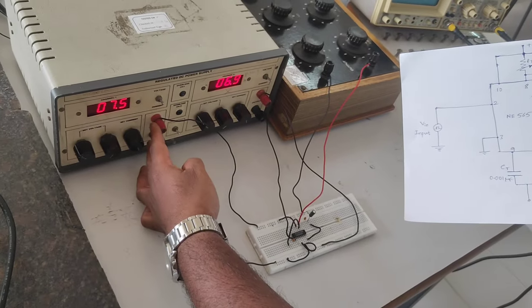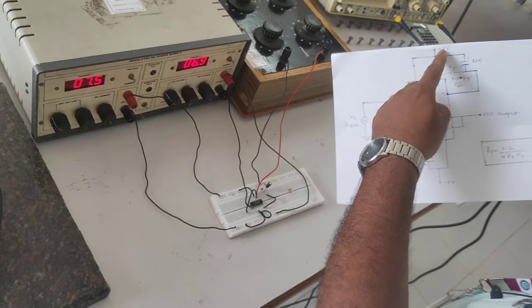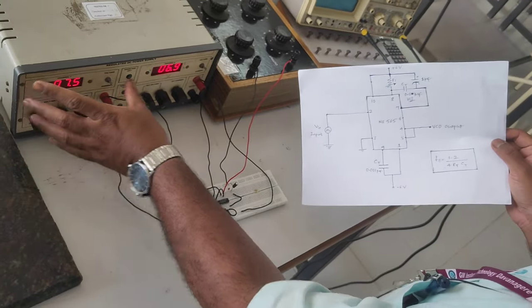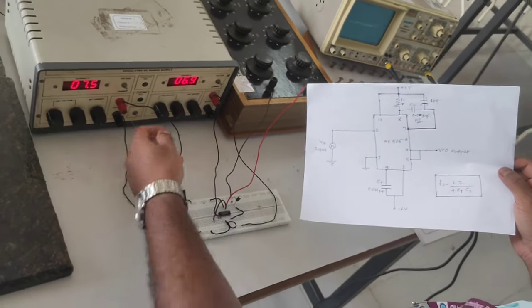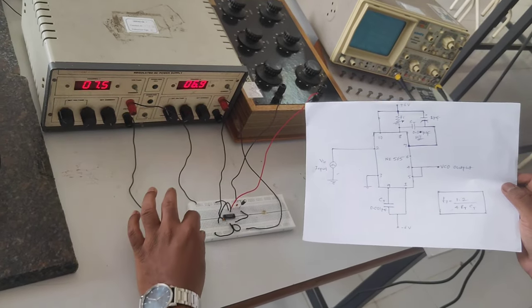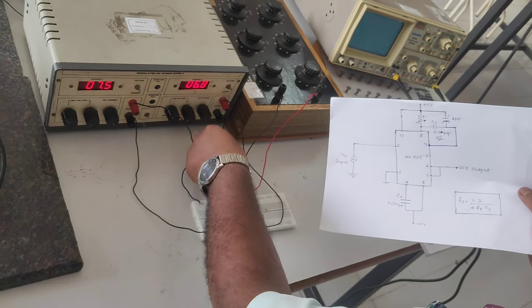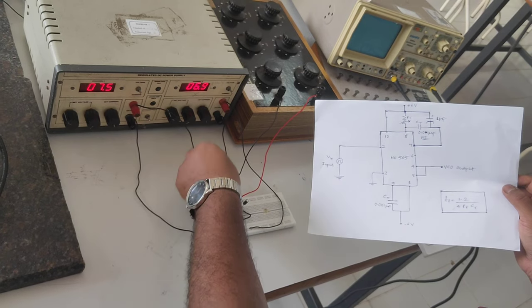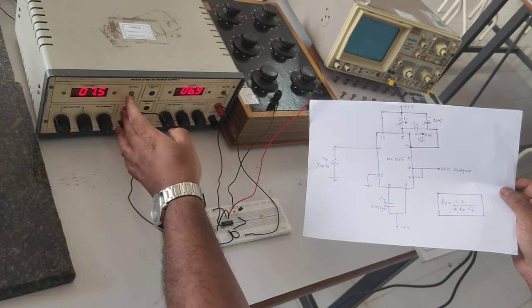So this is plus 5 volts, plus 6 volts I have taken from 1 power supply and minus 6 from 1 power supply. You know that for positive voltage you need to connect to the positive terminal of the power supply, negative should be grounded. For negative you should connect negative to the actual pin and positive should be grounded. Remember this point very well.